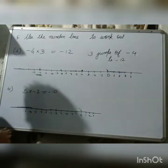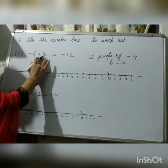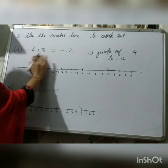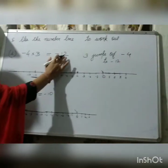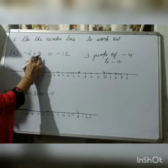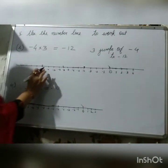Use the number line to work out. So, our first question is minus 4 into 3. So, you have to find the product first. 4 into 3 is 12. And this one is negative, one is positive. So, our product will get a negative sign according to the rule.